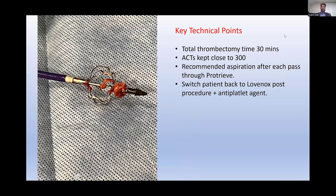Key technical points: total thrombectomy time using RevCore was about 30 minutes. We kept ACTs close to 300. Aspiration through the ProTree is recommended after each pass, as debris builds up and you don't want it causing venous occlusive phenomena. Regarding anticoagulation, I've been switching patients back to Lovenox for at least the next month — erring on the side of caution given the scrubbing and potential inflammation — then switching back to their prior anticoagulation. I'm finding noncompliance to be the main issue in some of my chronically occluded stents, rather than anticoagulation failure.